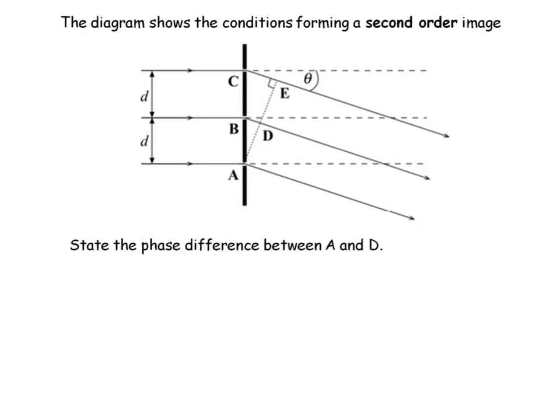This is a question about diffraction gratings, thinking about interference — both constructive and destructive. This is a past exam question I'm going to talk through. The diagram shows the conditions, and the key thing from reading the question is that it's forming a second order image. So in the equations, n is going to be equal to 2 for this question.